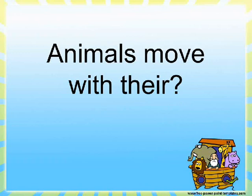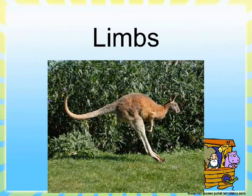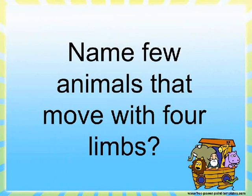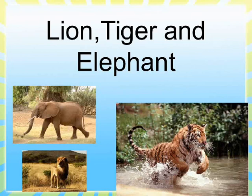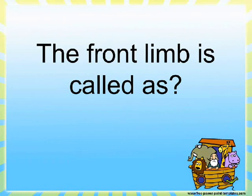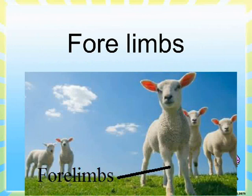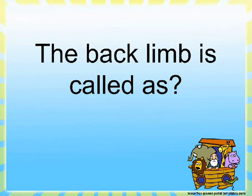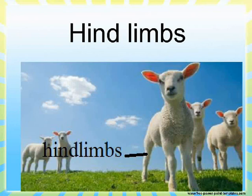Animals move with their limbs. Name a few animals that move with four limbs. Lion, tiger, and elephant. The front limb is called the forelimb, and the back limb is called the hindlimb.